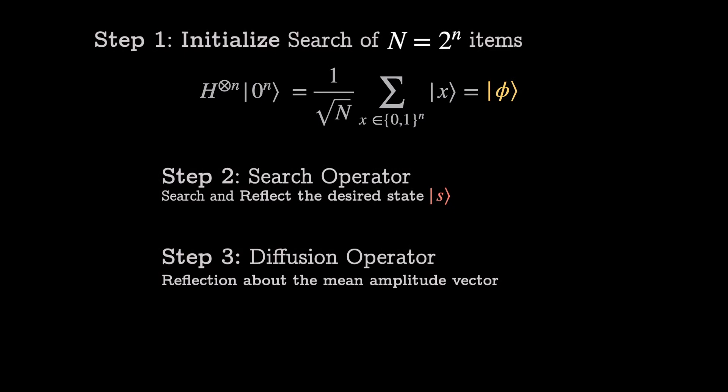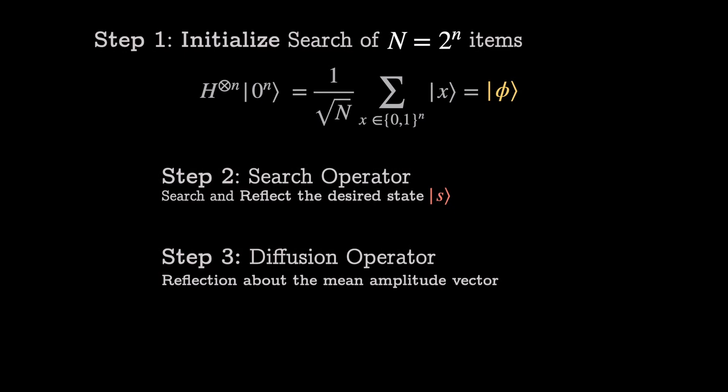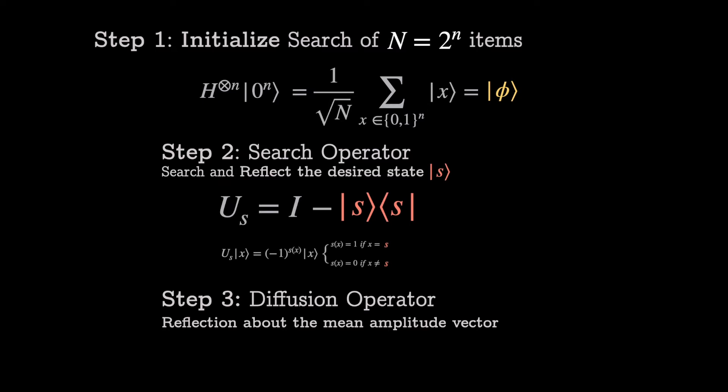The second step is the search operator. Our search function in the quantum space can be represented in two ways. First, the functional form. Our search function, s(x), is now an exponent of negative 1, and it intentionally flips the amplitude of a state if s(x) equals 1, since negative 1 to the power of 1 is negative 1. The second way, which we'll be focusing on in today's video, is writing it as a linear operator. And the reason for writing this will be clearer later. For now, this is a reflection operator.